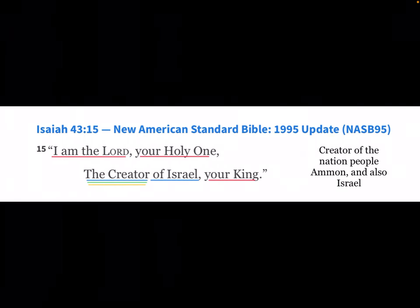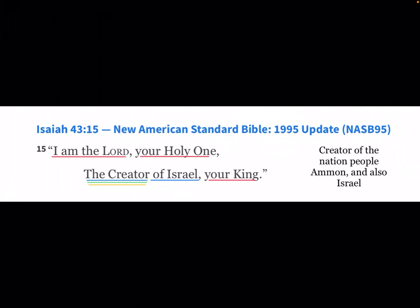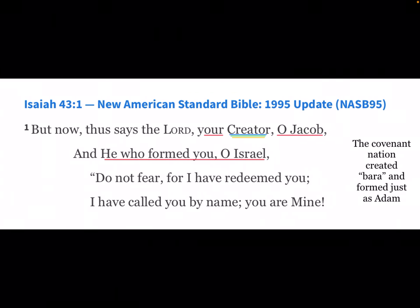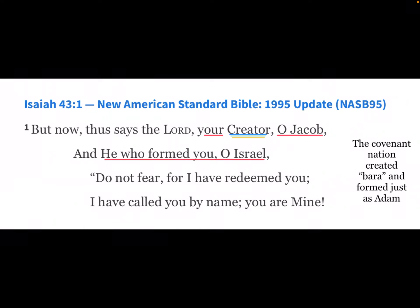Isaiah 43: 'I am the Lord, your Holy One, the Creator of Israel, your King.' Creator of the nation — people Ammon and also Israel. Isaiah 43:1: 'Your Creator, O Jacob, and he who formed you, O Israel' — the covenant nation, created and formed, just as Adam was created and formed.